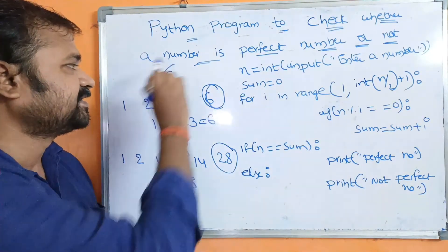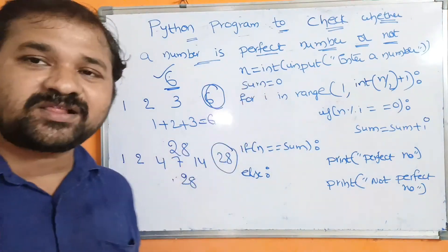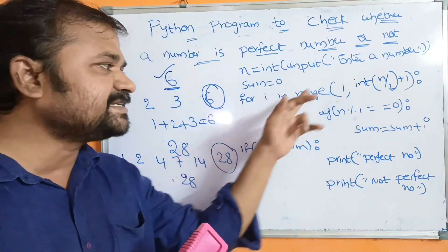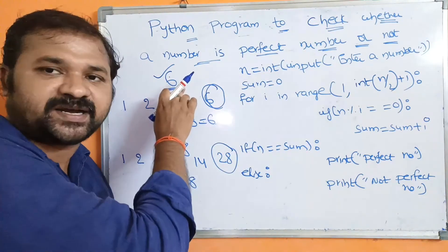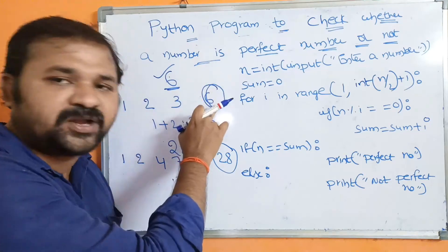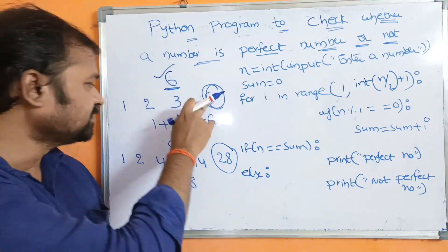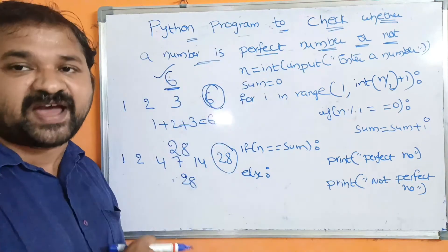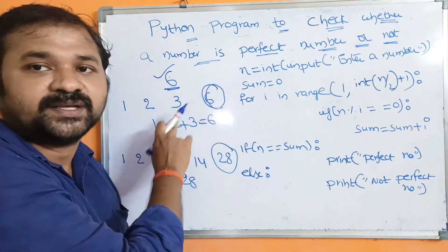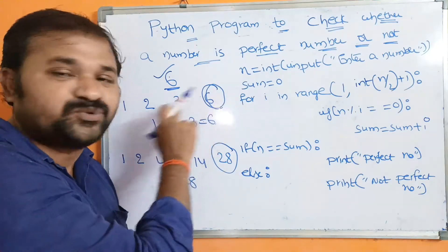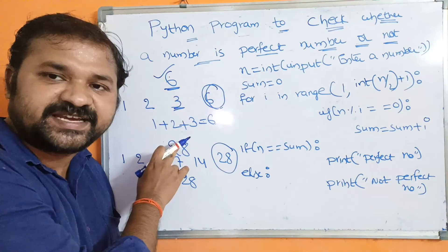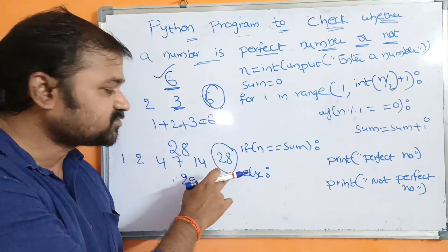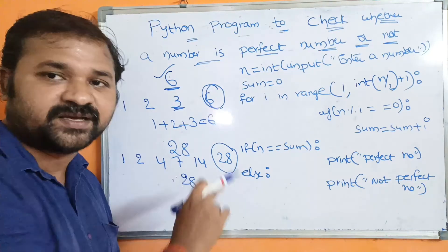Let the number be 6. We need a variable called sum with an initial value of 0 to accumulate the factors. In the for loop, for any number the maximum factor is the number itself, and the minimum factor is 1. The previous biggest factor before n is n divided by 2. For 6, that is 3; for 28, that is 14.